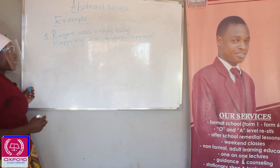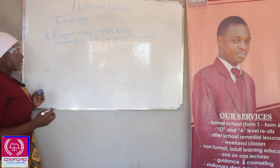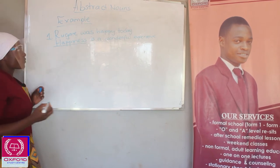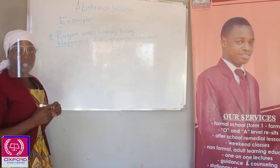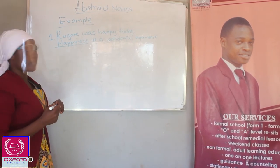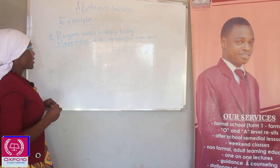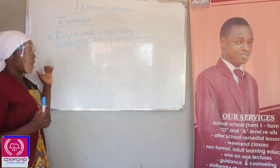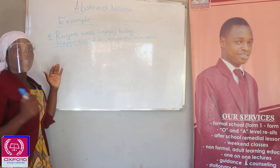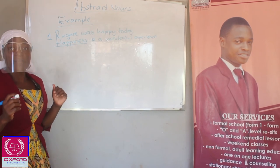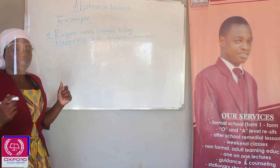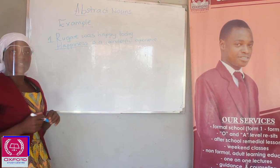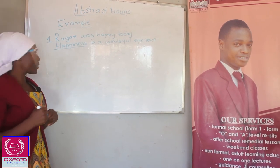From the first example, we can see that happiness is an abstract noun. Because we cannot see happiness with our eyes, we cannot touch it with our hands, but we can feel it or think about it.